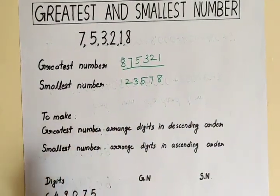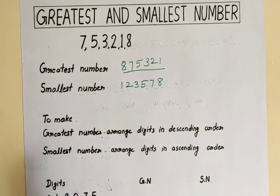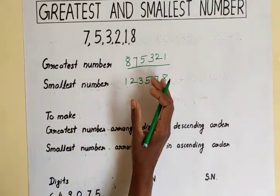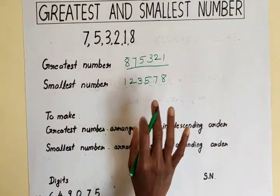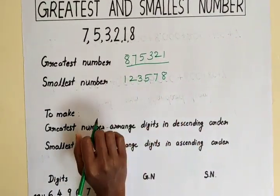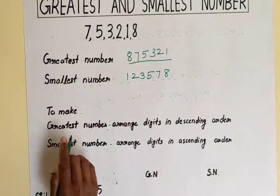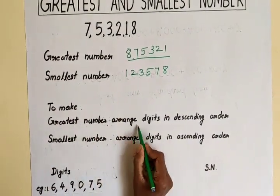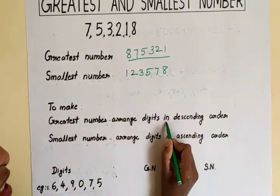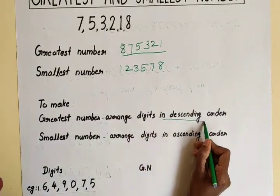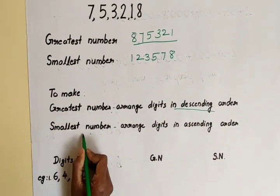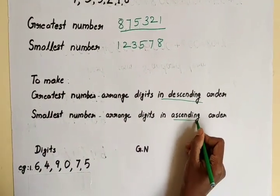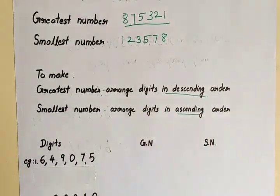Here, the numbering system is not mentioned, so there is no need to put commas according to numeration. To make the greatest number, arrange digits in descending order. To make the smallest number, arrange digits in ascending order.